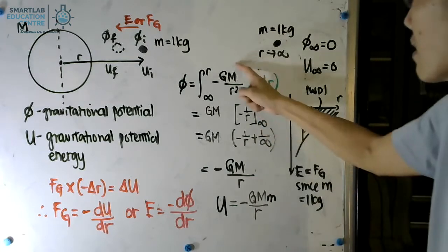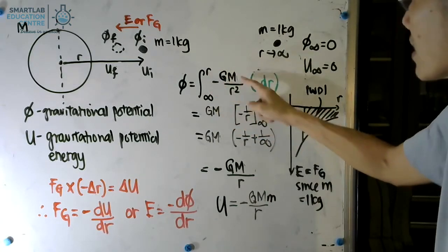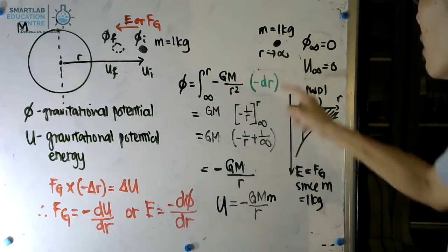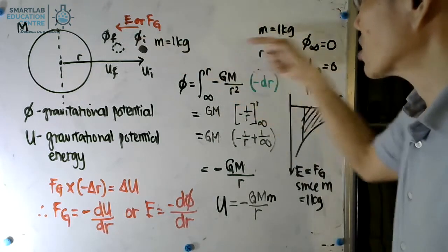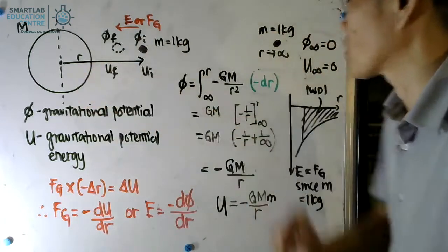The force is now minus GM over R squared, given that the small m is 1 kg, and the displacement is also negative. Both of them are pointing in this direction, which is opposite to the convention where R is positive.